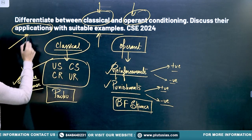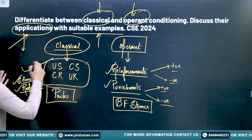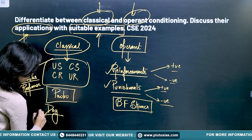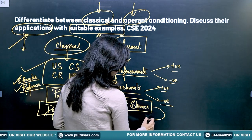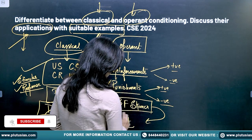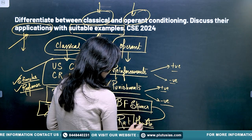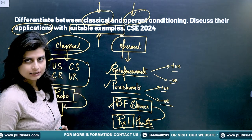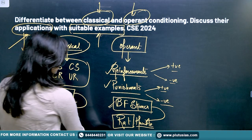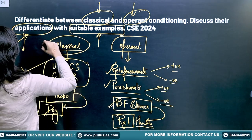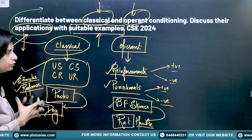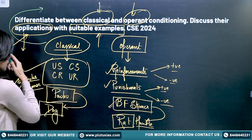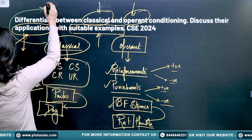When you put the examples, the application part is mark-fetching and the example is a different part. For classical conditioning you can go with the example of Pavlov's dog, and for operant conditioning with the experiment of the rat and the lever by B.F. Skinner. Application is more important because it grabs attention. Classical conditioning is basically used for bringing changes in behavior by associating it with something.